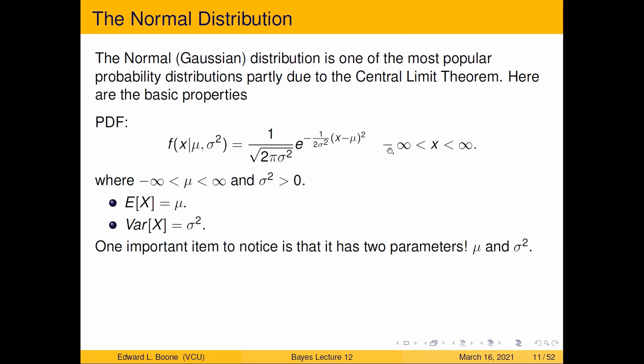It's a continuous random variable that goes from negative infinity to infinity. You can see that the density is quite interesting to look at, but the most important thing is notice that it has two parameters in it. And those parameters, mu, can go from negative infinity to infinity and it's a location parameter. It's actually the mean. And sigma squared has to be greater than zero and it's actually the variance.